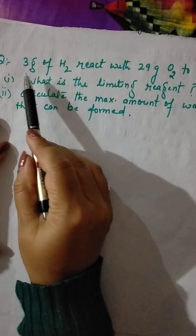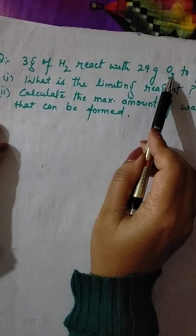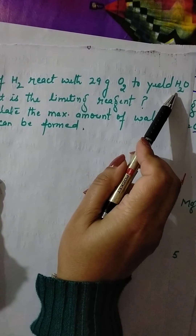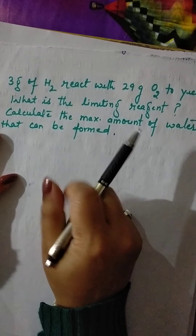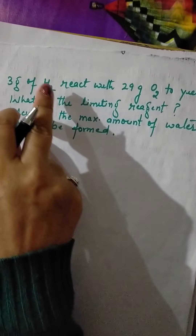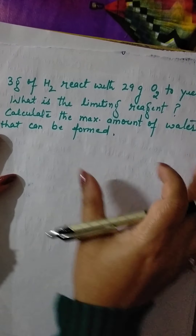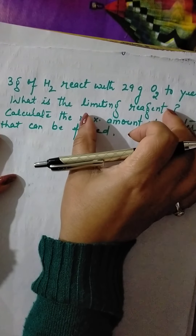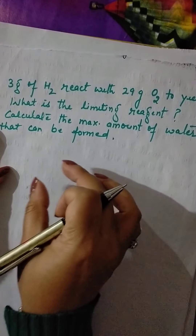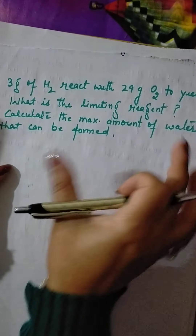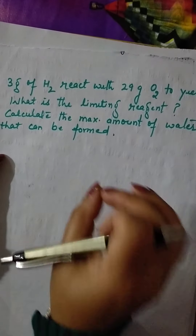This is how you solve limiting reagent numericals. Here is your homework: 3 grams of hydrogen react with 29 grams of oxygen to yield H2O. Which is the limiting reactant? Write the balanced equation for H2 + O2 → H2O, extract the information, identify the limiting reactant, and calculate the maximum amount of water that can be obtained using the mass of the limiting reactant.